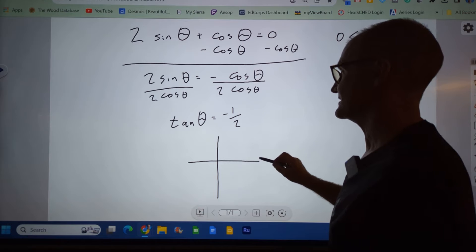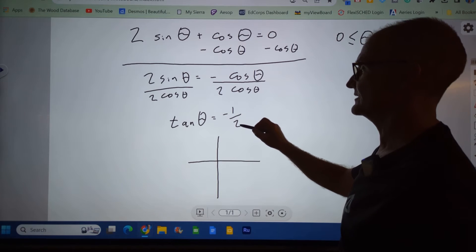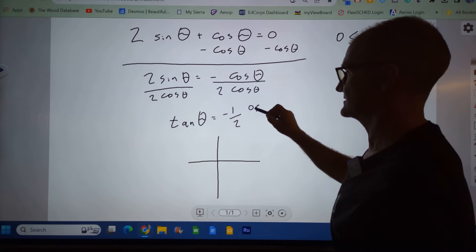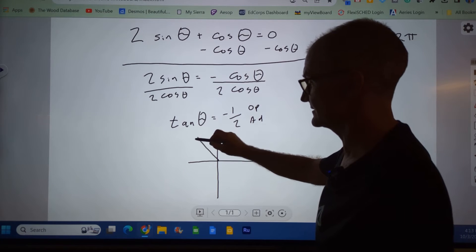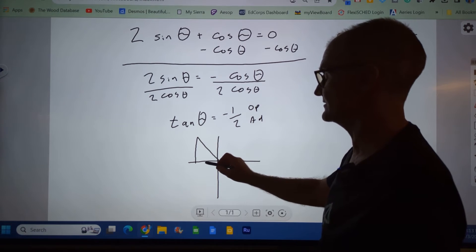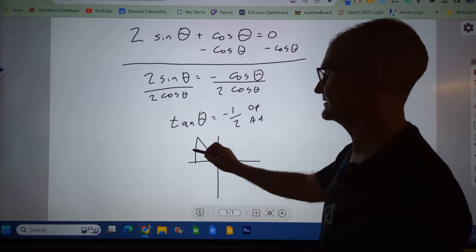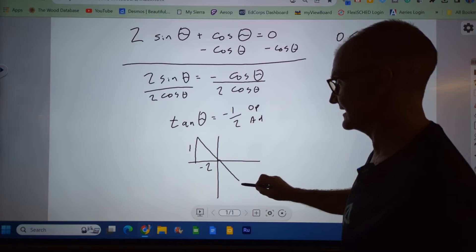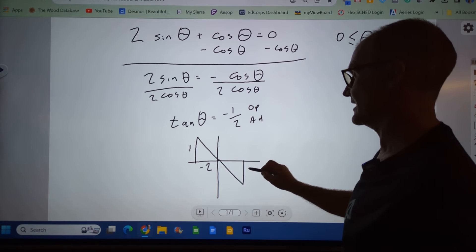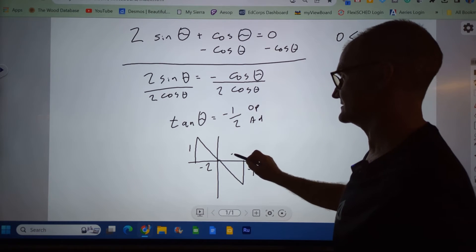That is saying the opposite is negative 1 when the adjacent is 2. So I have an opposite of negative 1 where the adjacent is 2. That could happen here where this is positive 1, this is negative 2. We're down in the fourth quadrant where opposite is negative 1, adjacent is 2.